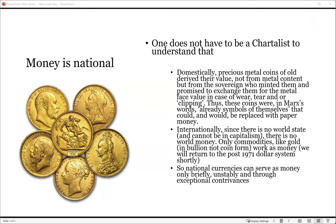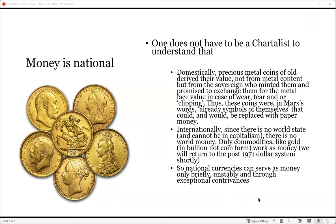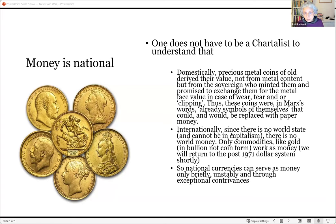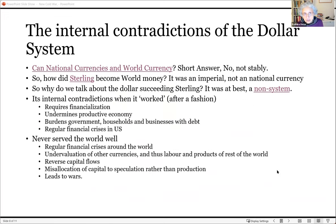If national currencies cannot be world money, how did sterling become world money? It was able to serve as world money because it was an imperial currency, not a national currency. The era of sterling dominance ran roughly from 1870 to 1914 — often called the gold standard period, but scholars would say it was actually a gold exchange standard, because it was not gold that circulated but sterling notes. You could exchange a sterling note for gold if you demanded it, but people nearly never did, because they were happy with the promise. Gold's price was only the benchmark of sterling's value. The Bank of England actually conducted the gold standard with very little gold.